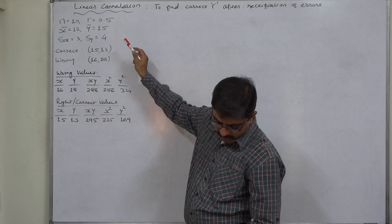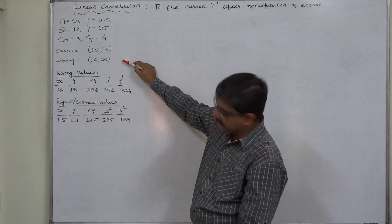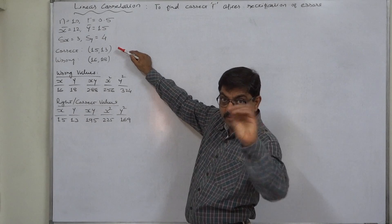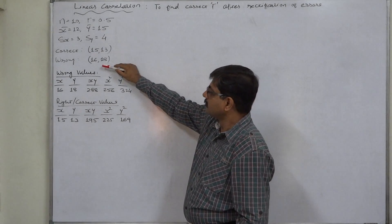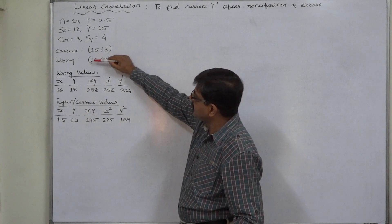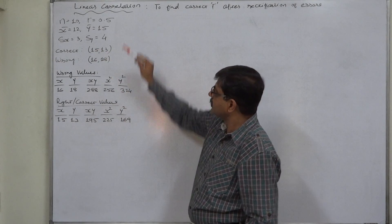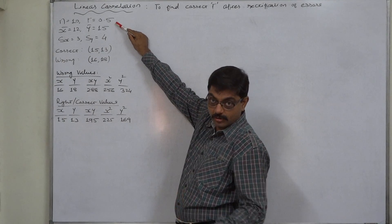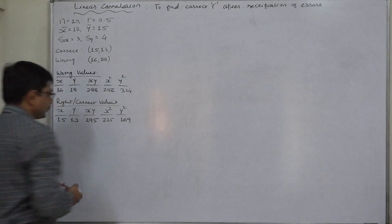At the time of computation, one pair (15, 13) was wrongly taken as (16, 18). So x was taken as 16 instead of 15, and y was taken as 18 instead of 13. Therefore, this value of the coefficient of correlation is the wrong one. We need to obtain the correct value of the coefficient of correlation.